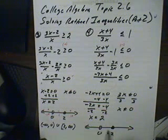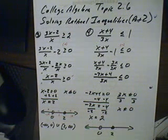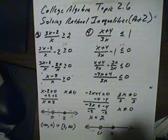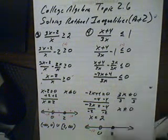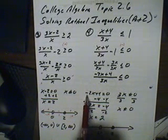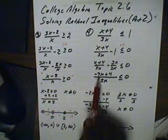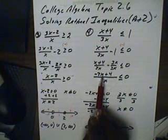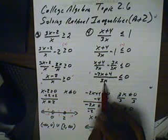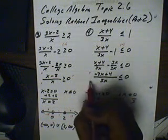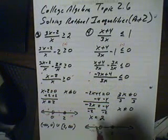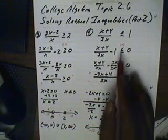Let's check the three regions. First, a number before 0 — let's try x = −10. We have −2 × (−10) = 20, plus 4, which is positive. And 3 × (−10) = −30, which is negative. Positive divided by negative makes this region negative — that's good, because that's what we're looking for.